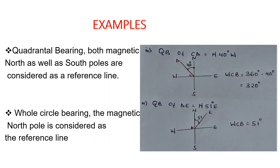Example three: we have a Quadrantal Bearing of CD — North 40 degrees West. We measure 40 degrees from the north pole. Now let's find the Whole Circle Bearing. The full circle is 360 degrees, and we subtract the 40 degrees of the Quadrantal Bearing. That is 360 minus 40, which gives us 320 degrees.